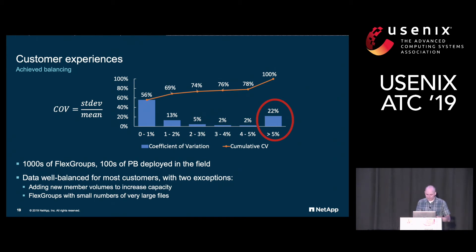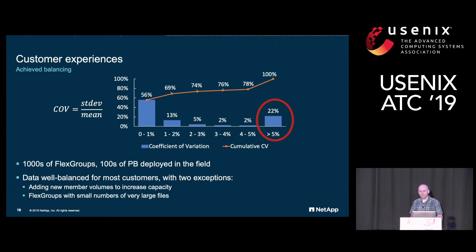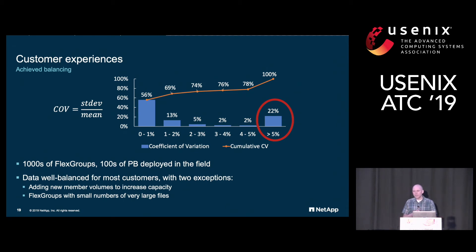The first pattern was customers who were starting to run out of space in their Flex Groups and then added volumes later. Originally we would be much more aggressive about trying to fill those new volumes, but we discovered that can cause runtime load issues, so we now do that more slowly. The second group comprised Flex Groups where they had a small number of very large files. This is because Flex Groups manages at a granularity of files or directories, so we can't split up files.